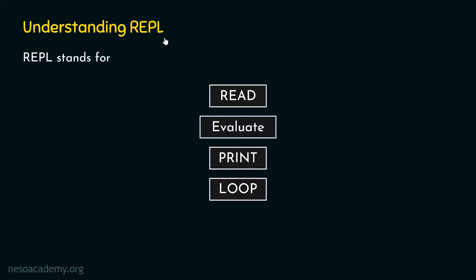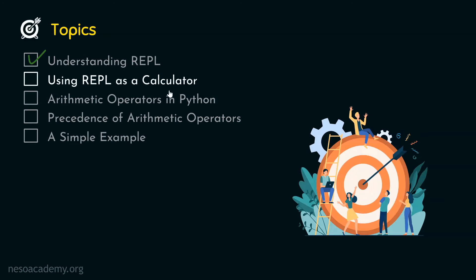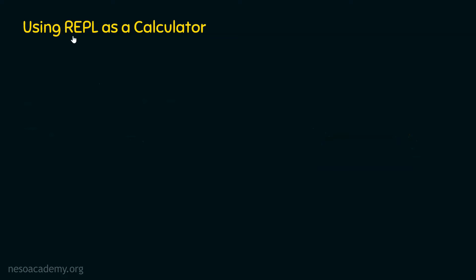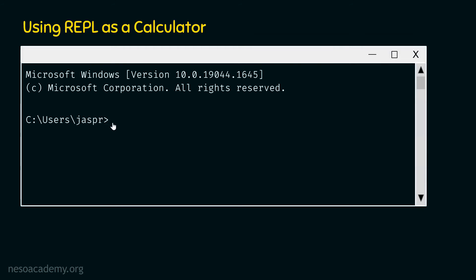Now we know why Python interactive shell is also called REPL. We can use REPL or Python interactive shell as a calculator — to perform calculations like addition, subtraction, multiplication, division, and so on. We have a bunch of arithmetic operators in Python. For now, let's try to perform some basic operations. We go to our command prompt, type the Python command, and hit enter to activate the interactive shell. Let's type the command 10 plus 5. We want to perform the addition of these two numbers. 10 plus 5 results in 15.